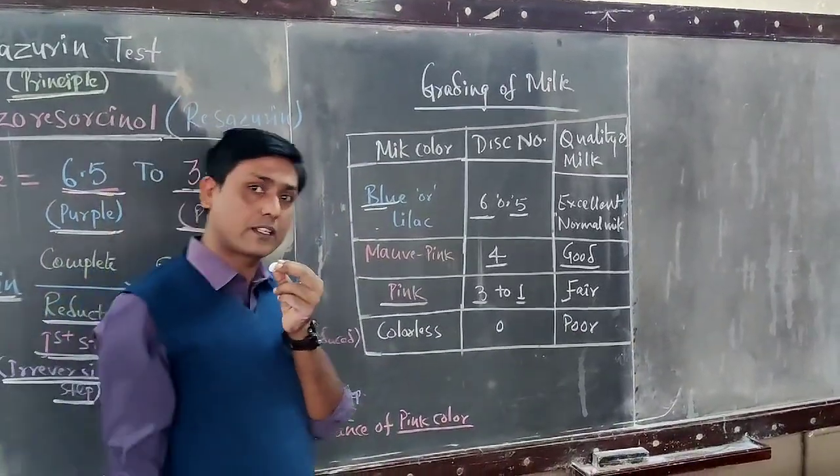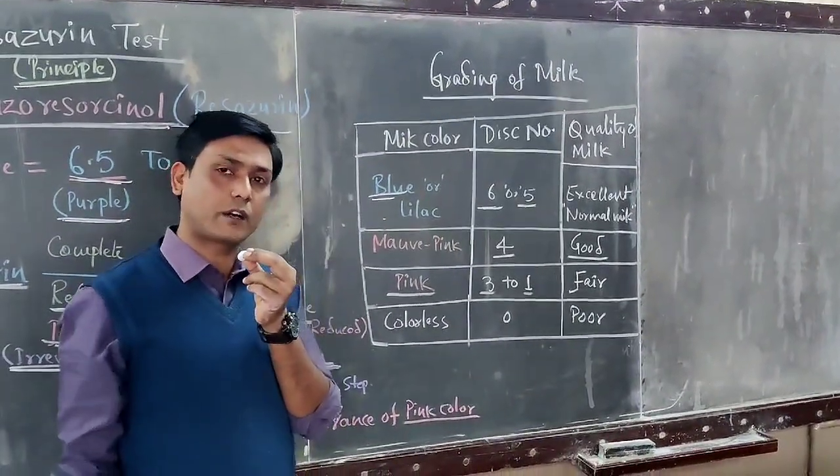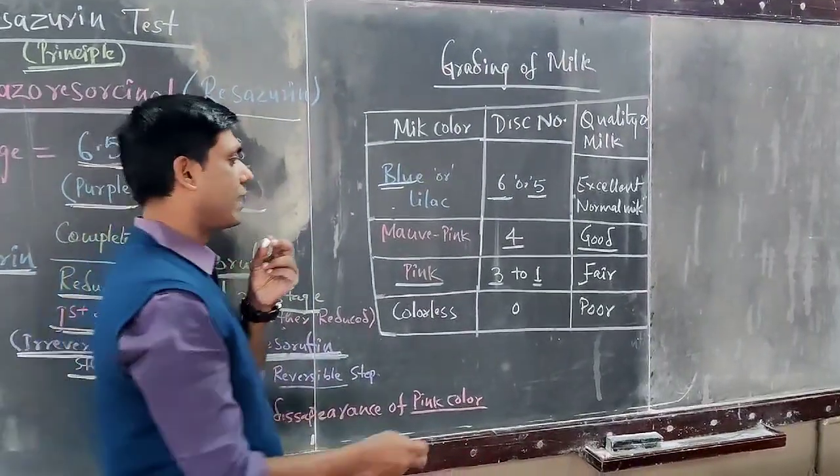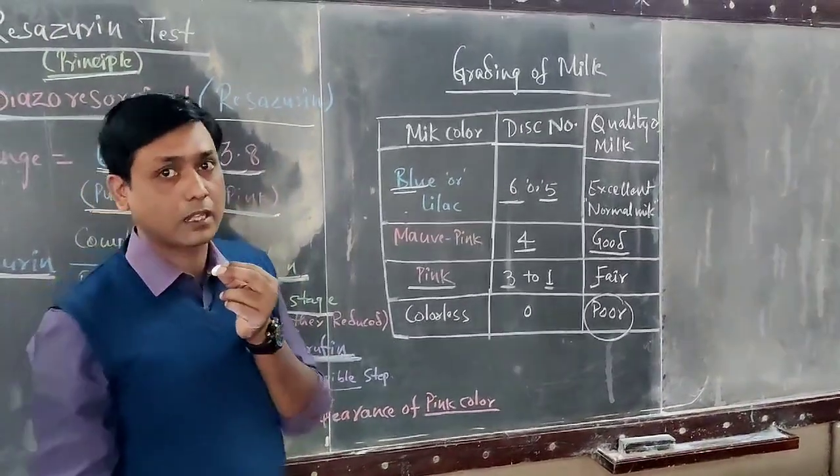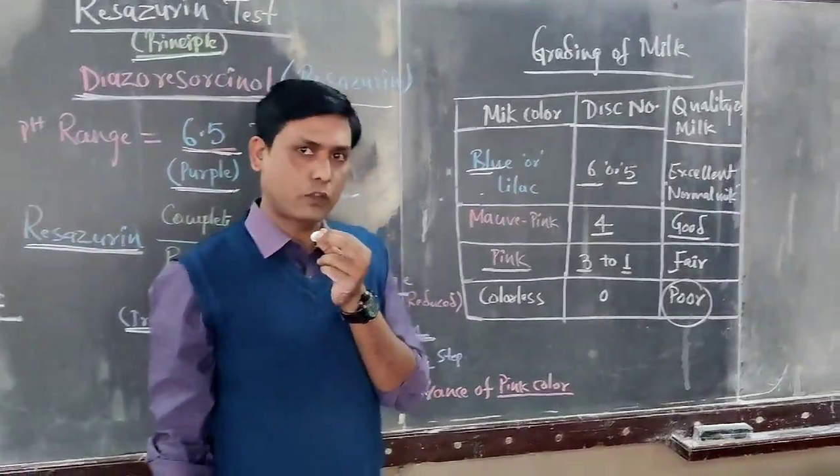If the milk color after one hour is colorless, this indicates poor quality milk, meaning the milk is contaminated with pathogenic microorganisms. Thank you very much.